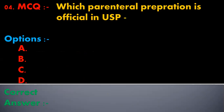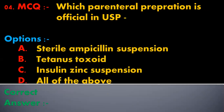The fourth multiple choice question is: which parenteral preparation is official in USP? Options are sterile ampicillin suspension, tetanus toxoid, insulin zinc suspension, or all of the above. The correct answer is all of the above — sterile ampicillin suspension, tetanus toxoid, and insulin zinc suspension are all official in USP.